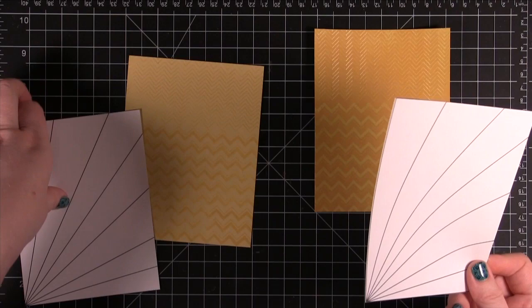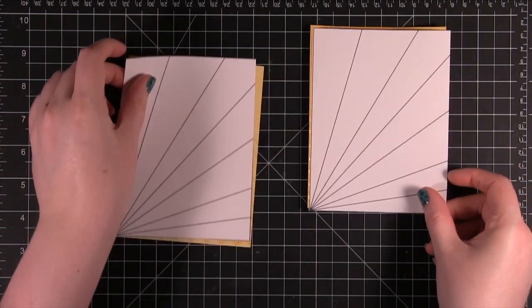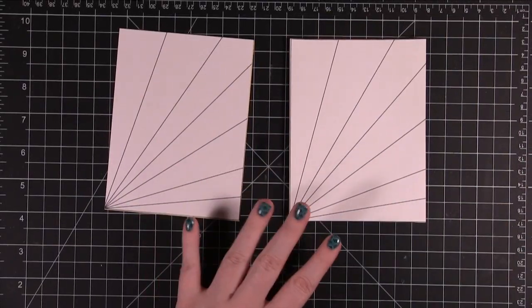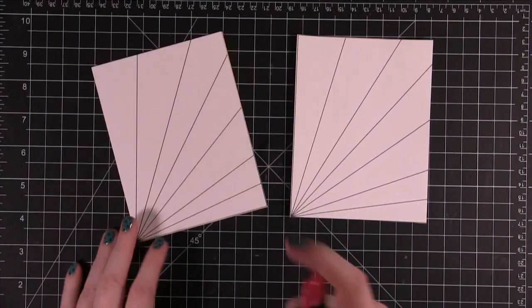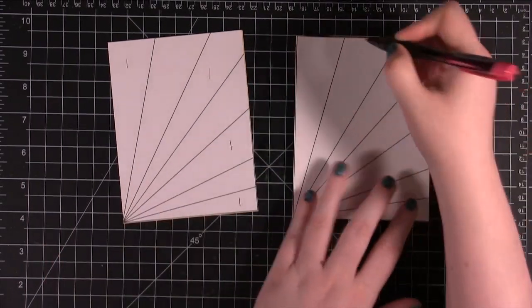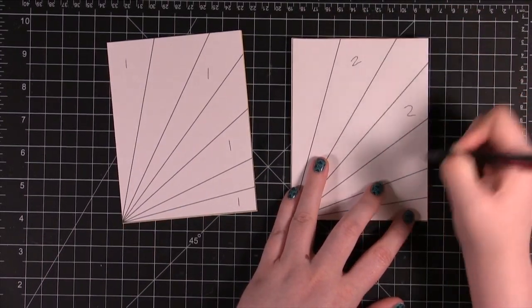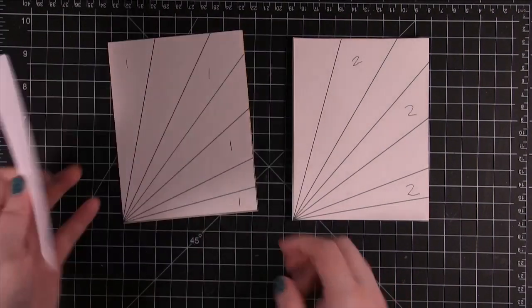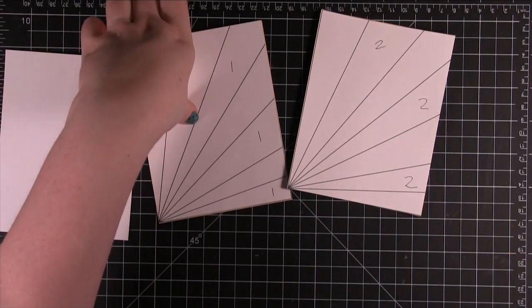All right, I'm going to take some removable adhesive and adhere these down to the front of the yellow pieces. All right, so this is how it's going to work. I'm going to take my pen and I'm going to say 1, 1, 1, 1 and over here I'm going to say 2, 2, 2. All right, so I have another piece of cardstock right here that I'm going to be using and I'm going to take my scissors.